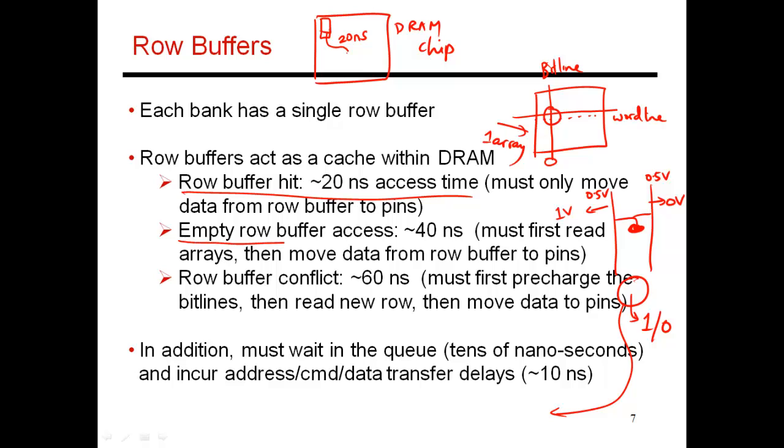Now the next option is an empty row access. So if you assume that the bit lines have already been pre-charged to this 0.5 volt value. So when they are pre-charged, when both the bit lines have an equal value, the row buffers basically contain nothing. Now when I say that here's a certain row that I'm interested in, that word line gets activated. And then the bit lines start to diverge, and the sense amplifier detects that signal.